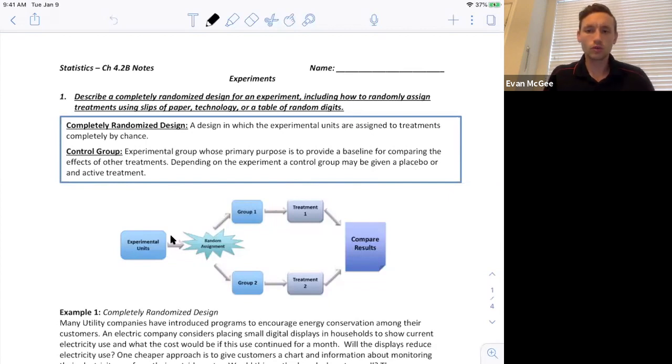So when we're drawing what a completely randomized design looks like we have our experimental units, we need to label that they're randomly assigned to the first treatment or the second treatment, and then in the end we're going to compare because we need to remember the four principles of experimental design. So let's take a look at an example here.